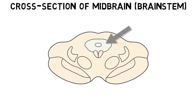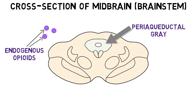The periaqueductal gray can be activated by signals from various other brain regions, but it is also readily activated by endogenous opioids — substances produced by the body that can cause natural pain-relieving effects by binding to opioid receptors, the same receptors that opioid drugs like morphine bind to. There are three major types of endogenous opioids: enkephalins, endorphins, and dynorphins.